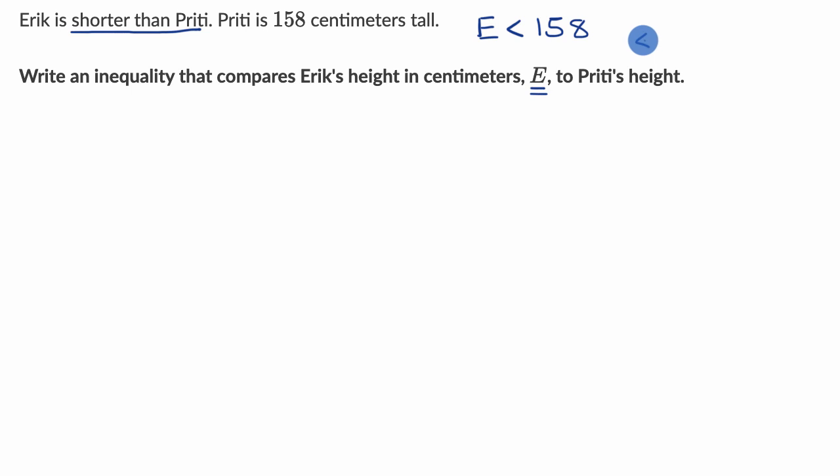You could think about it on a number line too. If I were to draw a number line like this, and this is 158 centimeters, Preeti's height, Eric's is going to be less than that because he is shorter. So it would be all of the values that are to the left of, let me do this in another color, that are less than that, just like that.